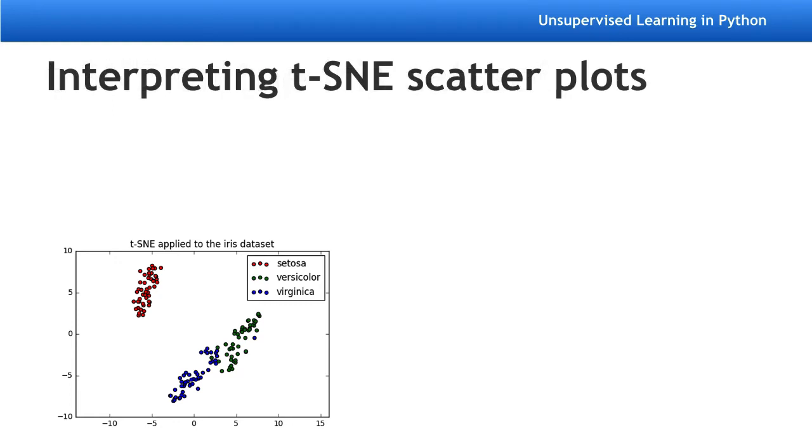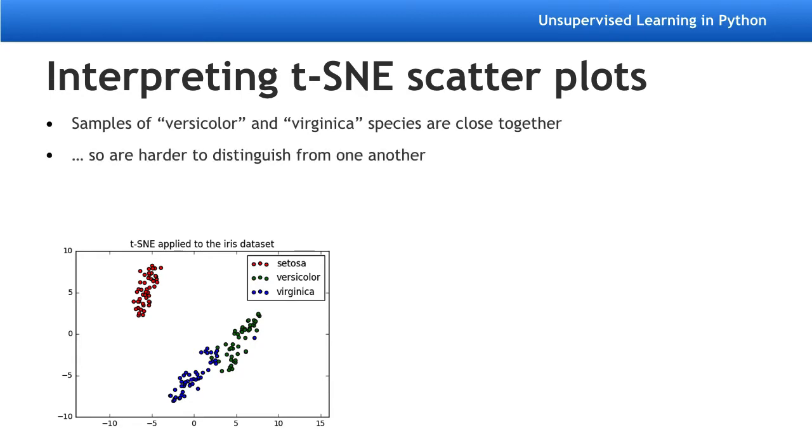This scatter plot gives us a new insight, however. We learn that there are two iris species, versicolor and virginica, whose samples are close together in the feature space. So it could happen that the iris dataset appears to have two clusters, instead of three.